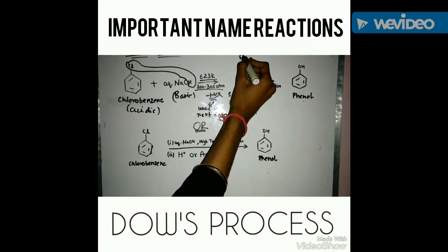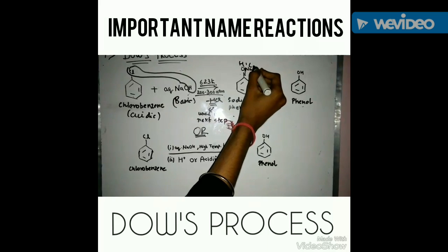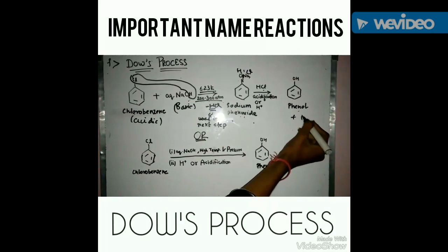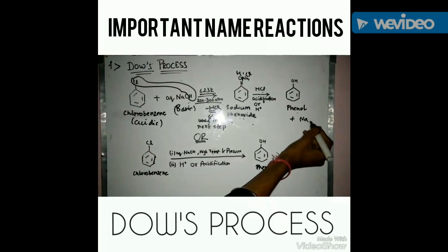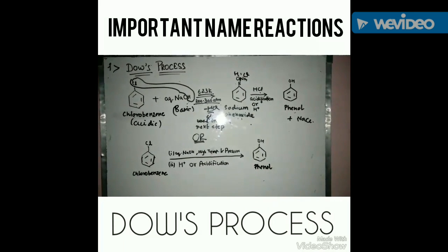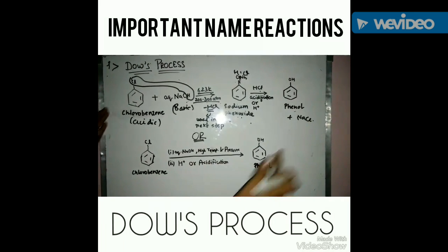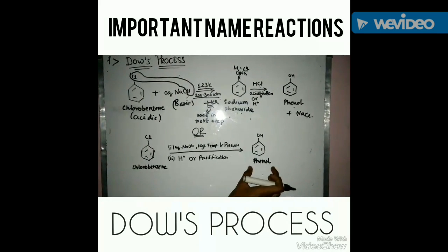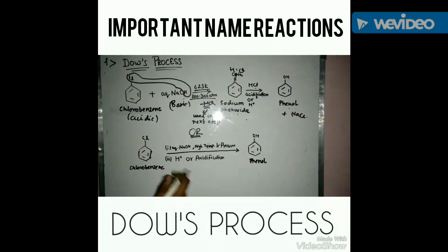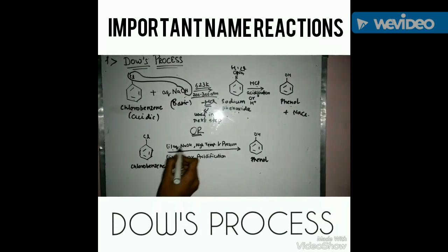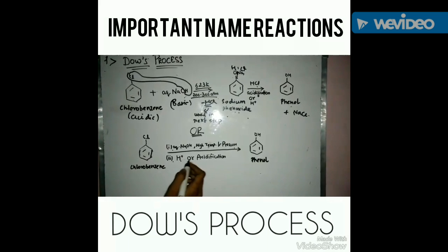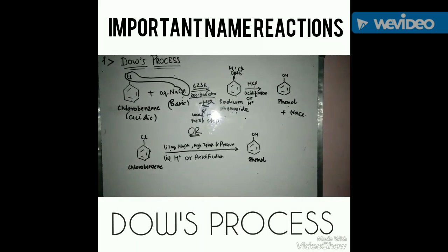When sodium phenoxide is formed, it is acidified using HCl which is released in this step to give phenol. In short form, the equation can be written as: chlorobenzene, with conditions aqueous NaOH at high temperature and pressure, followed by H⁺ acidification, gives phenol.